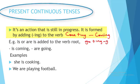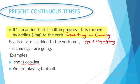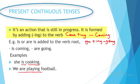For instance: 'She is cooking' — this shows a present continuous tense, something that is still happening, it's continuous. 'She is cooking.' 'We are playing football.' These are examples of the present continuous tense.